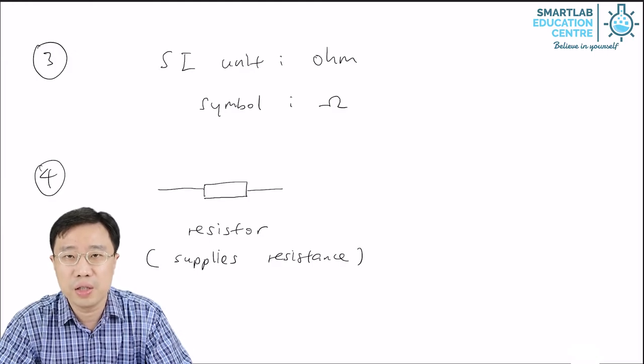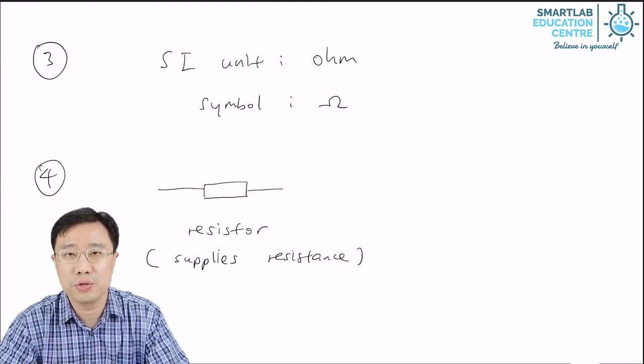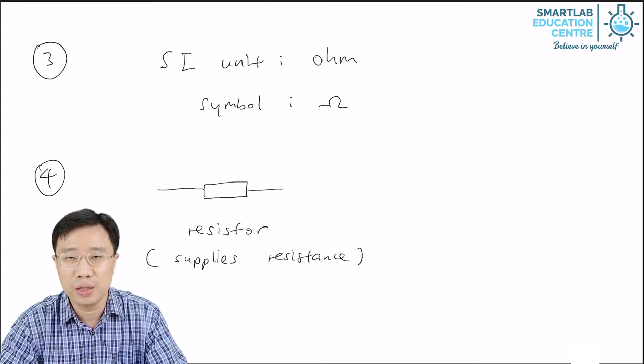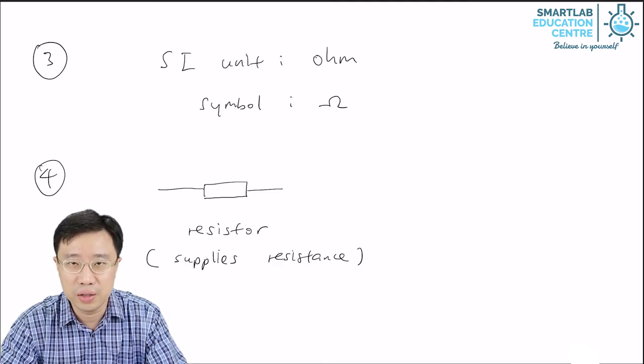There is a type of circuit component that is used to supply resistance. The symbol for this circuit component is a rectangle with a wire on each side. This component is called a resistor.